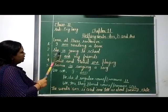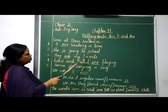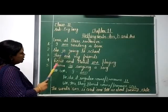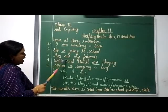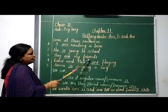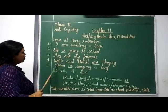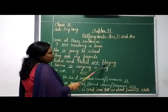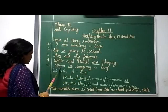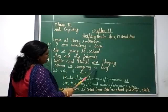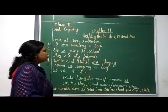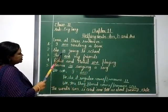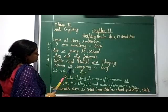Now read the lesson examples: 'She is going to school.' You can see that 'is' is used here. 'They are my friends.' 'Are' is used here. 'Rohit and Mohit are playing.' 'Sima is singing a song.' So students, you can see in these sentences, am, is, and are are used.